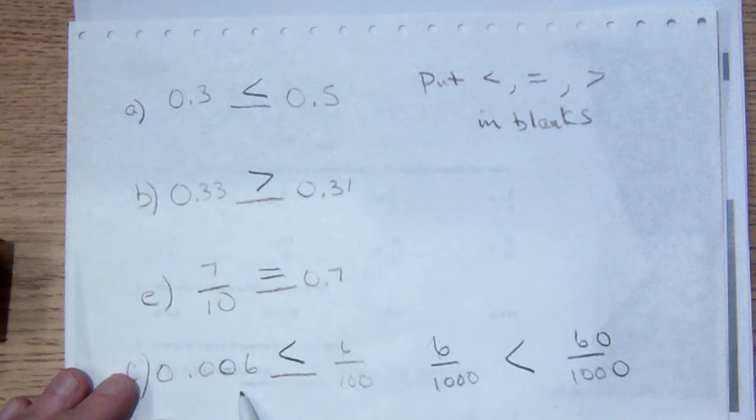7 tenths is equal to 7 tenths, and here when I'm trying to compare these, .006 is tenths, hundredths, thousandths, that is 6 over 1,000. And this is 6 over 100.